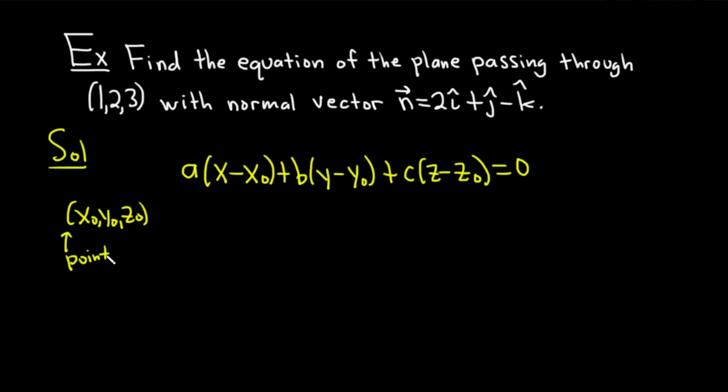In this case, it's given. And abc are the components of the vector that is perpendicular to your plane. So n = (a, b, c), and this is called the normal vector.